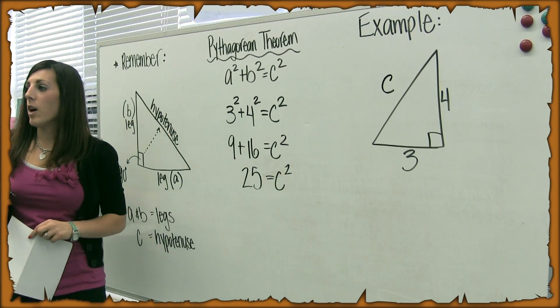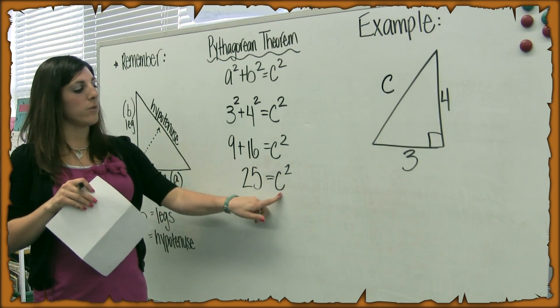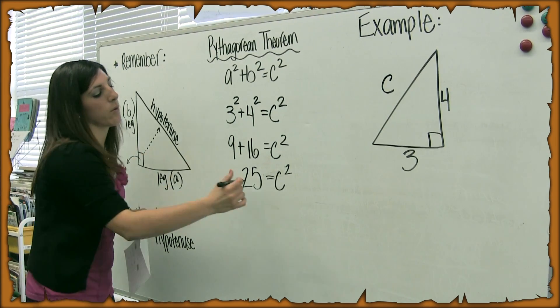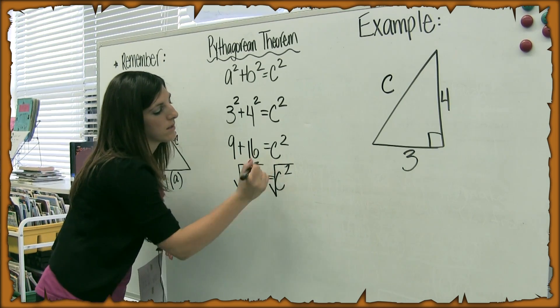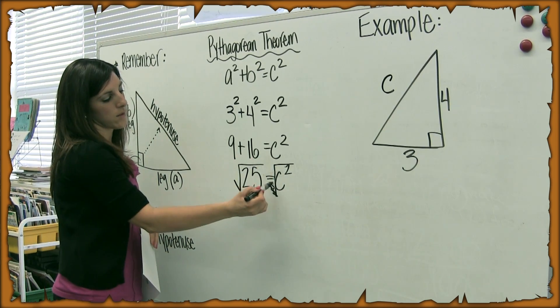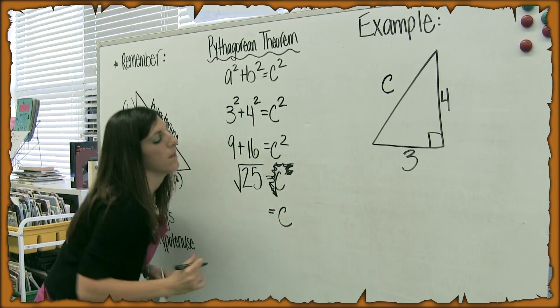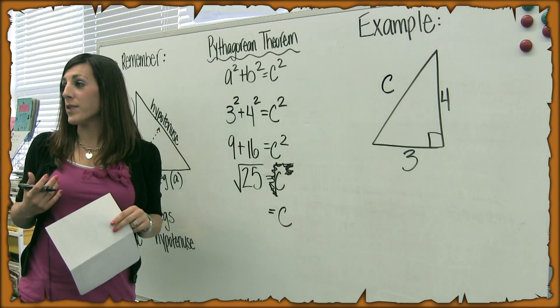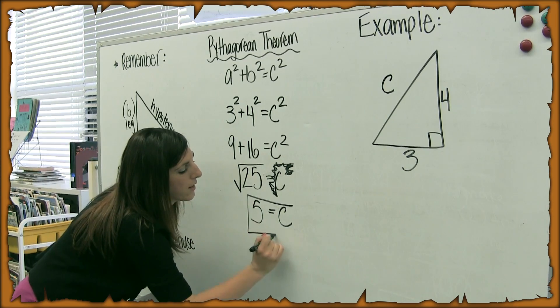Now, I want to get C all by itself. I need to know what C is. So in order to do that, we have to do inverse operations. The opposite of squaring something is to take the square root. So I'm going to take the square root on both sides. Over here, that cancels out the square root and the square, so I'm left with just C. And over here, I take the square root of 25. So 5 times 5 is 25, so that means the square root is 5.